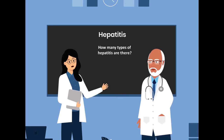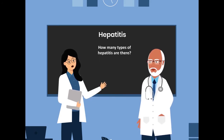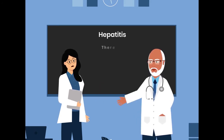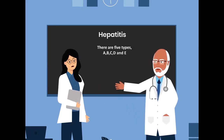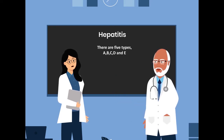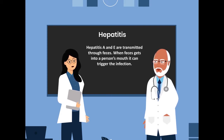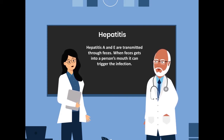How many types of hepatitis are there? There are five types: A, B, C, D, and E. Hepatitis A and E are transmitted through feces.